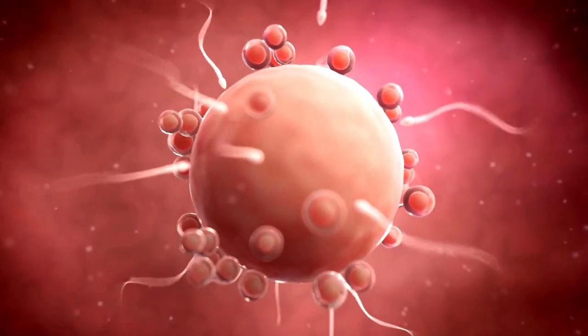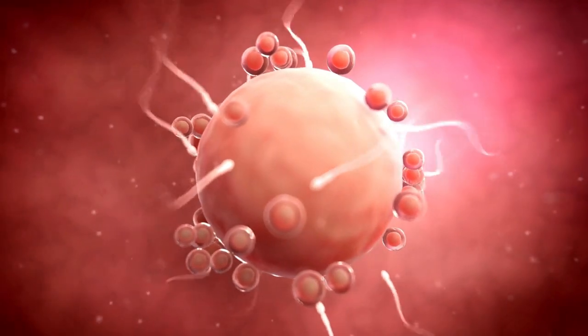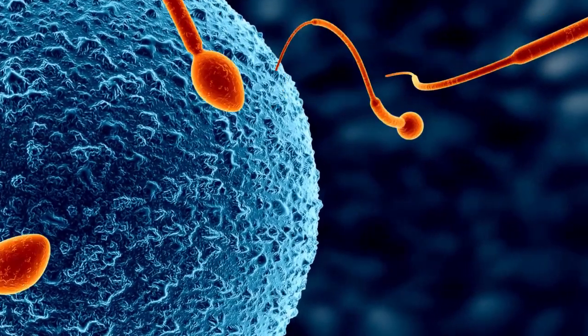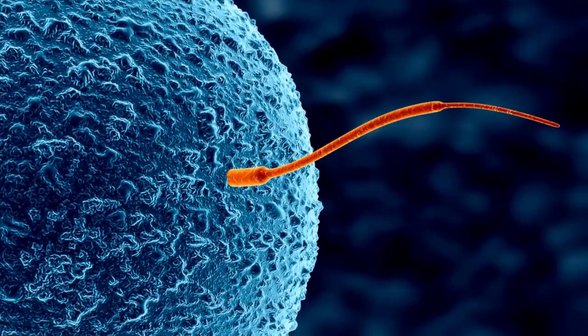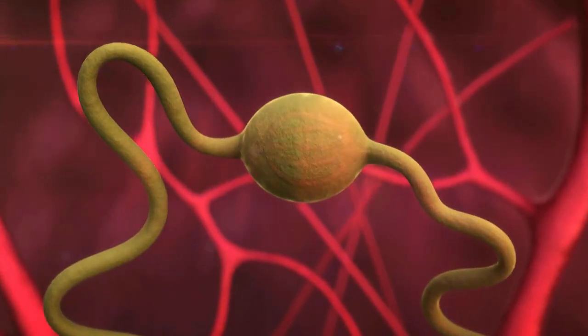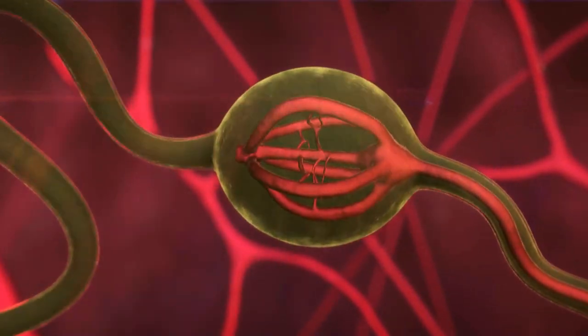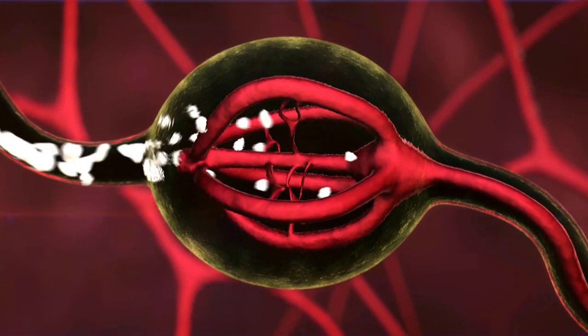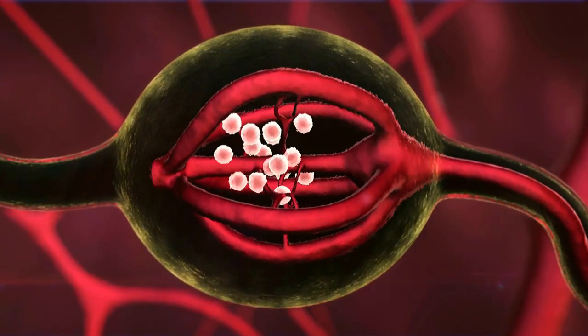Overcoming obstacles. The sperm's next challenge is to pass through the cervix and into the uterus. The cervix usually remains tightly closed, but during ovulation it opens for a few days. The sperm swim through the thin cervical mucus, which aids their passage.